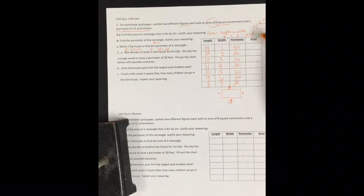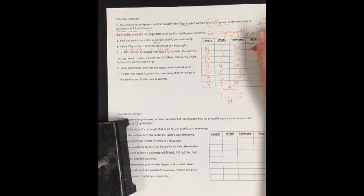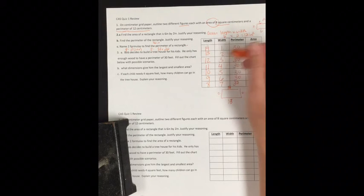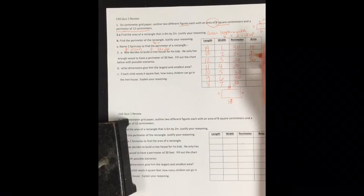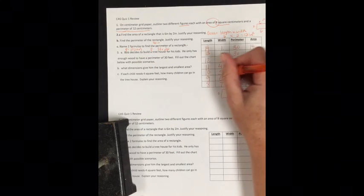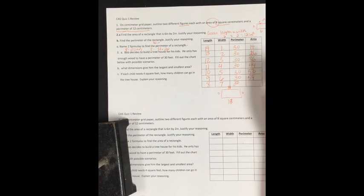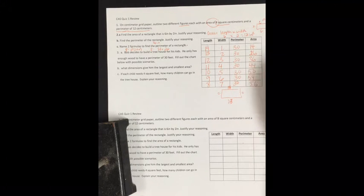Now to find my area. We do length times width to get area. 14 times 1 is 14. 13 times 2 is 26. 12 times 3 is 36. 4 times 11 is 44. 10 times 5 is 50. 9 times 6 is 54. 7 times 8 is 56. 8 times 7 is 56.